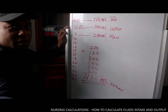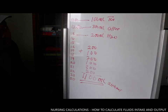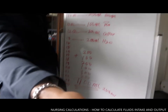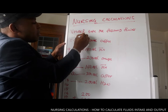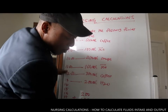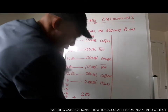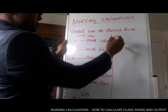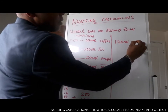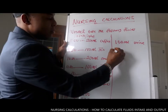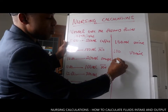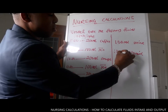Now the other thing you might be asked is to calculate the output. So this section we've done is the intake — also called input. Now we need to calculate the output. At 8 o'clock, Vena urinated — went to the toilet and passed 100ml of urine. At 9 o'clock, 100ml of vomit. At 10 o'clock, 200ml of urine.